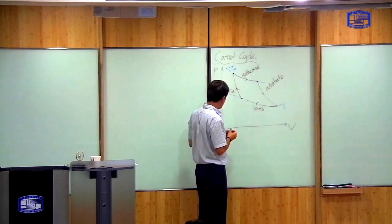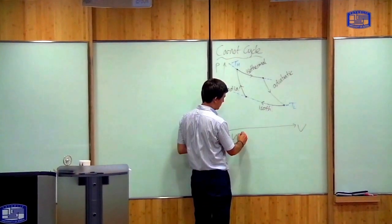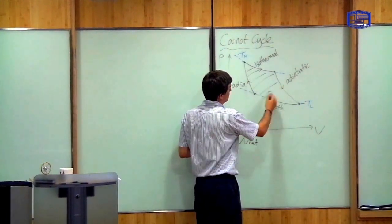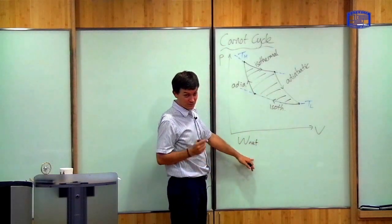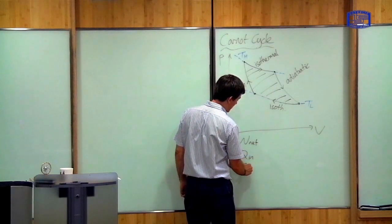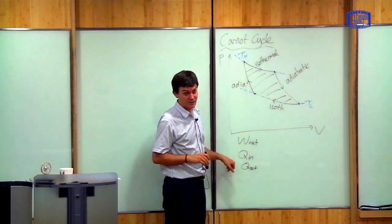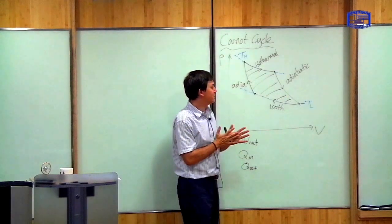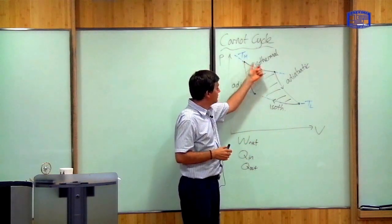In general you can't calculate everything. If I show you a picture like this and ask you what the work is, you can calculate that because the net work is just the area enclosed. But in general if I ask you how much heat has gone in or out in each stage, you do not have enough information. To calculate the efficiency of the cycle in general, you need to know something about the behavior of the system.